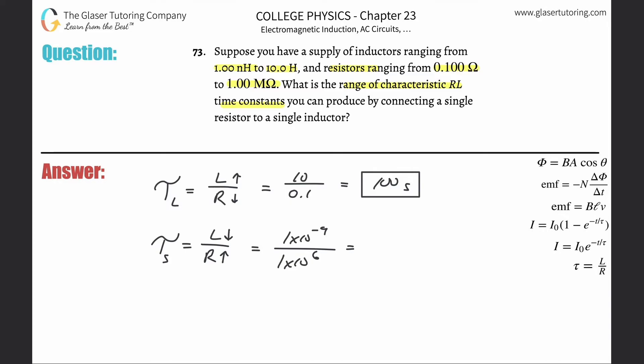Now we simply plug it into the calculator — or add the exponents — and this works out to be 1×10⁻¹⁵ seconds. That is the smallest time constant.